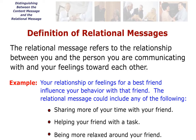For example, your relationship or feelings for a best friend influence your behavior with that friend. The relational message could include any of the following: sharing more of your time with your friend, helping your friend with a task, or being more relaxed around your friend.